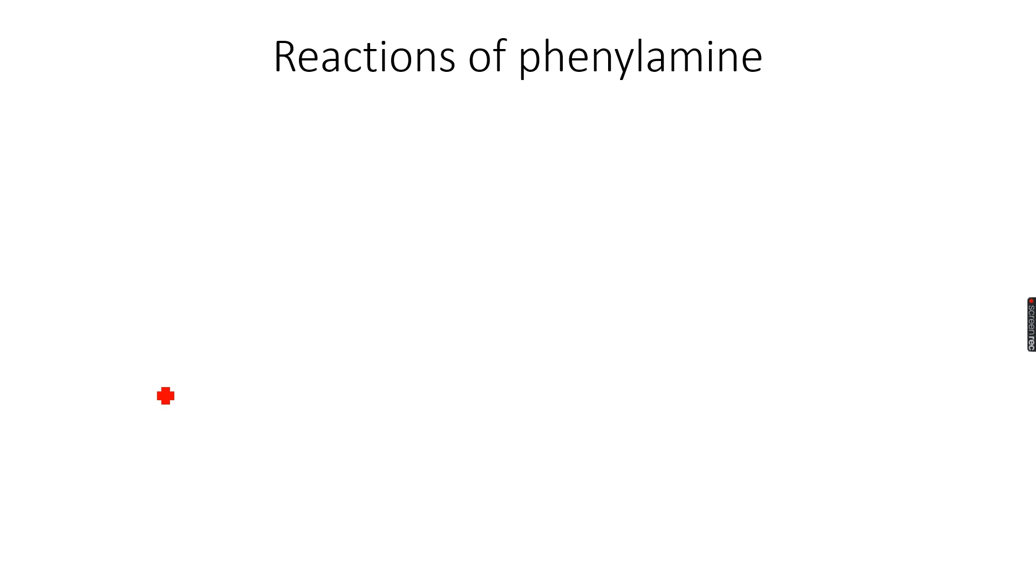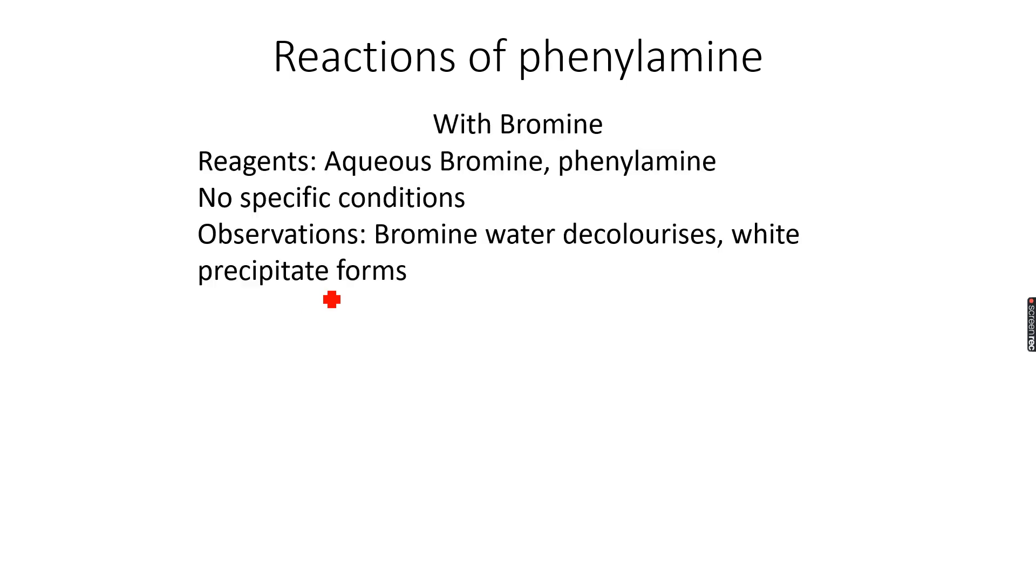Now let's move to reactions of phenylamine. There are two characteristic reactions that are very important. One is the reaction with bromine, and the other is the formation of dyes. We've all seen colored dyes - we dye our hair - but how are those dyes formed? First, we're doing the reaction of phenylamine with bromine.